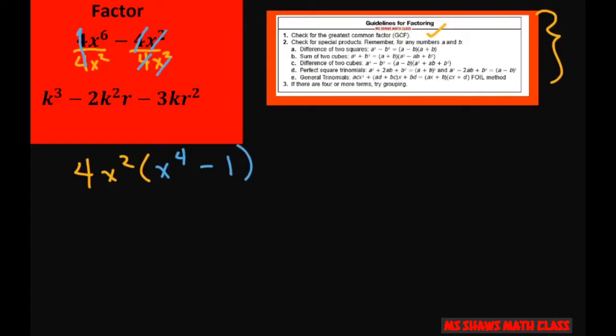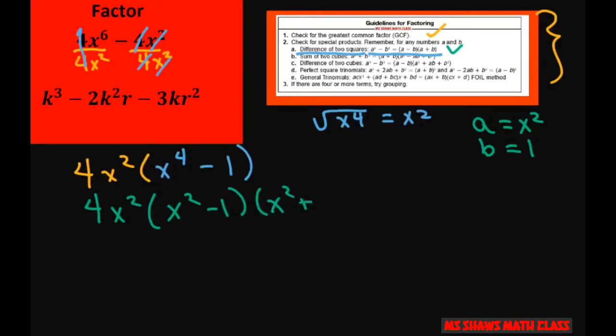Now that we have that, we notice that this is the difference of two squares. Because I can take the square root of x to the 4th, which equals x squared. So I'm going to use this formula and factor this out further. So we have 4x squared. And I'm going to let my a equal x squared. The square root of 1 is just 1. So I'm going to use this formula here and write this as x squared minus 1 times x squared plus 1.